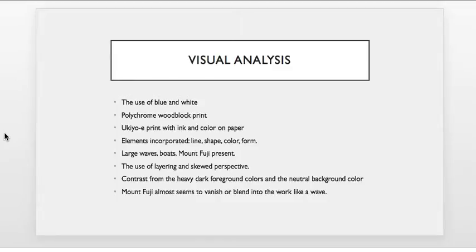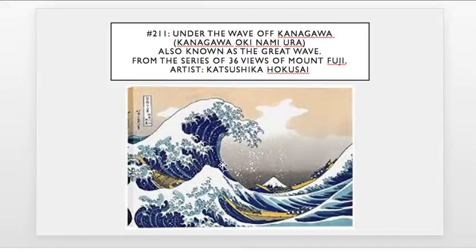The visual analysis is the first thing — these are basically the elements we see in the work. We see the use of blue and white. We understand that it's a polychrome woodblock print, otherwise known as a ukiyo-e print, with the use of ink and color on paper. Elements incorporated within the work include line, shape, and color — you could even say form is incorporated. We notice the large waves, the three boats, and that Mount Fuji is present. We also see a lot of neutral colors along with the blue, in the boat, in the mountain, and in the background itself.